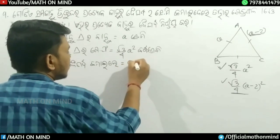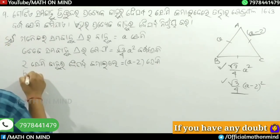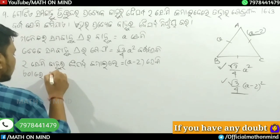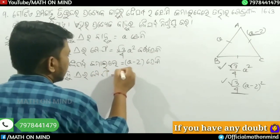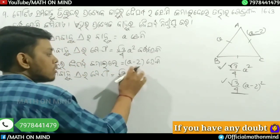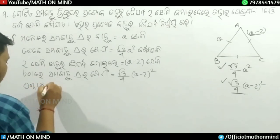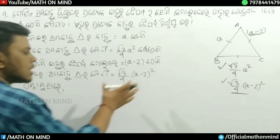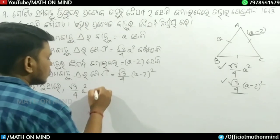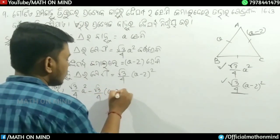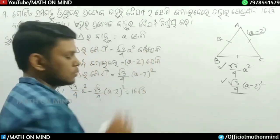Now using the area formula: root 3 by 4 into a minus 2 whole squared equals the given area. Expanding this using the formula for a minus 2 whole square, we get a squared minus 4a plus 4. So the equation becomes 16 root 3 on one side.